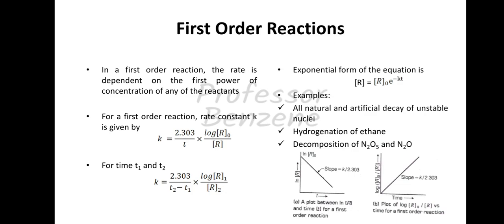Some examples of first order reactions: all natural and artificial radioactive decay of unstable nuclei follow first order kinetics. Hydrogenation of ethane, decomposition of N₂O₅ and N₂O are also examples of first order reactions. A plot between [R] concentration and time for the first order reaction shows it is reduced constantly. The plot of ln[R₀]/[R] versus time gives a straight line going upward where the slope is k upon 2.303.